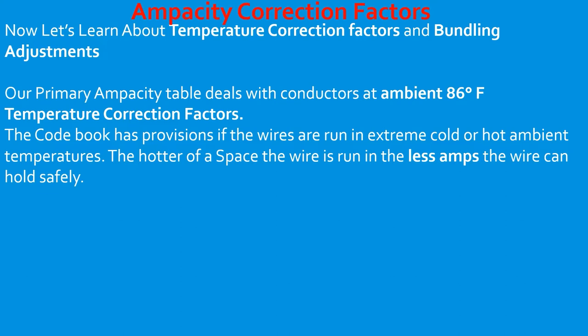The codebook has made provisions for wires run in extreme cold or hot ambient temperatures. The hotter the space the wire is run in, the less amps the wire can hold safely. The colder the weather, the more amps the wire can hold safely. If the temperature around the wire is super hot, it's going to be less able to dissipate the heat, and the heat may degrade the wire and insulation itself, reducing safe ampacity.